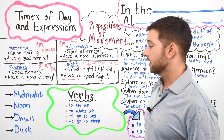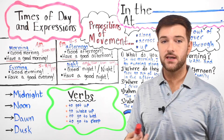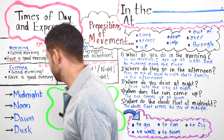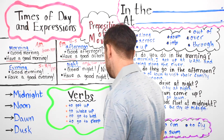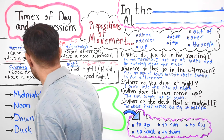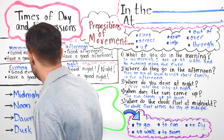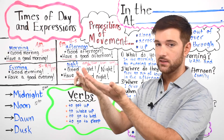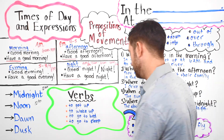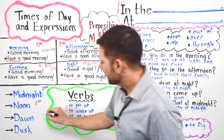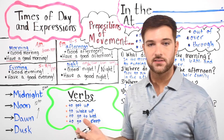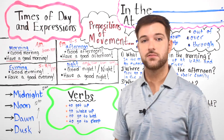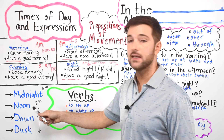We also have some other words. Midnight is at 12 a.m. Noon is at 12 p.m. Dawn is when the sun comes up in the morning. Dusk is the opposite of dawn — dusk is when the sun goes down. So you have dawn and dusk, midnight and noon.